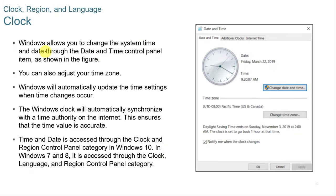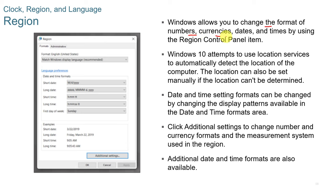The Clock allows you to change the date and time and adjust your time zone. Windows will automatically synchronize with a time authority on the internet. In Windows 10, date and time is accessed through Clock and Region; in Windows 7 and 8, it's under Clock, Language, and Region. The Region tab allows you to change the format of numbers, currency, dates, and times. Windows 10 uses location services to automatically detect the computer's location, and additional date, time, and number format settings are available.